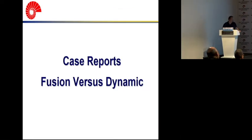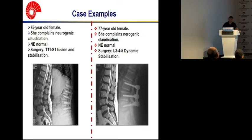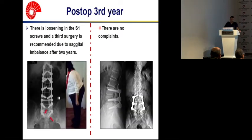I would like to show some cases. This is lumbar spinal stenosis with degenerative spondylolisthesis. In the first case, the patient is stabilized with the fusion technique. In the second case — these are two different but similar cases in a similar age group — the patient is stabilized with dynamic stabilization following decompression. The first patient developed a pseudomeningocele and had continuous pain and burning sensation in both legs. In the follow-up period, she developed screw loosening at the S1 level in the post-operative third year.